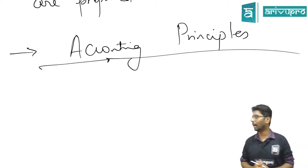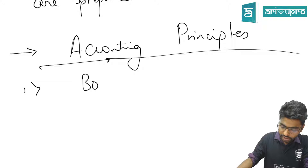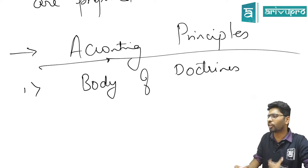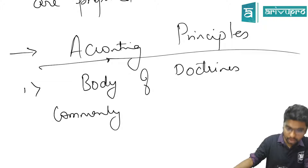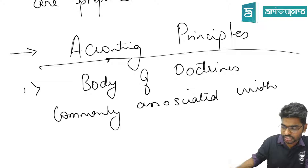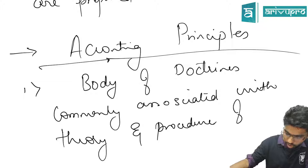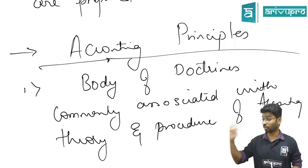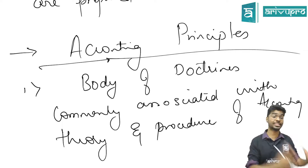Now, accounting principles. The first part: it is a body of doctrines — that is, a body of rules and regulations. It is commonly associated with the theory and procedure of accounting. So these rules and regulations not only tell you the theory of accounting but also the explanation part of it.